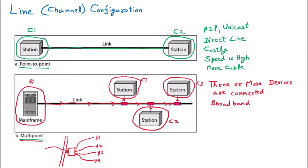This is multi-point communication, and broadband is the best example. It is effective in terms of cost because less cabling is required. In point-to-point, if there are seven different places, seven direct wires are needed from the company. But in multi-point, one wire comes and seven different homes can be connected, so it is less cabling and less cost.